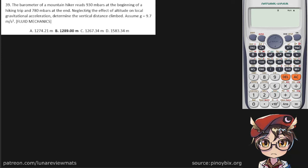The barometer of a mountain hiker reads 930 millibars at the beginning of a hiking trip. So that sounds like our p1. 930 millibars multiplied by 100 gives us 93,000 pascals.